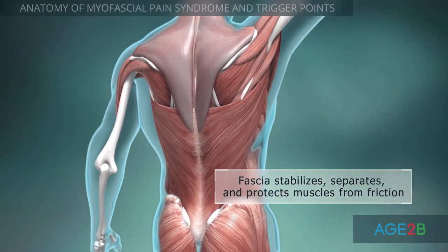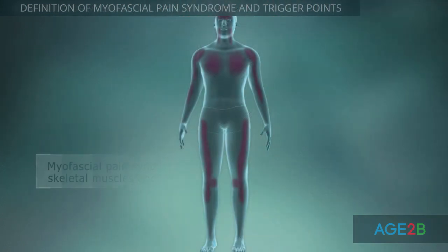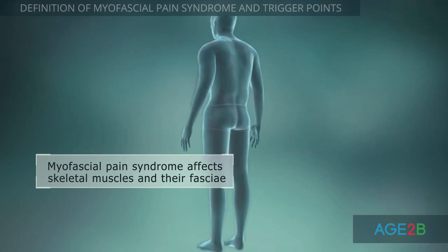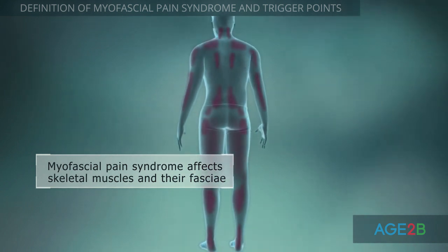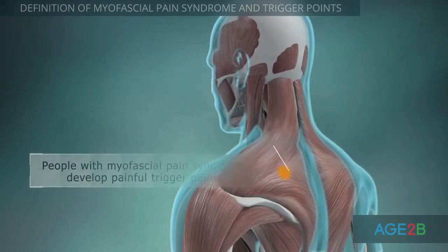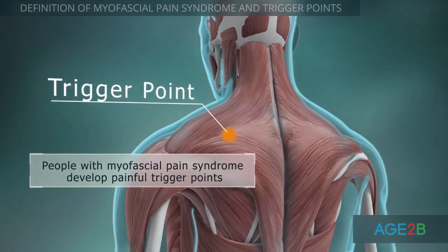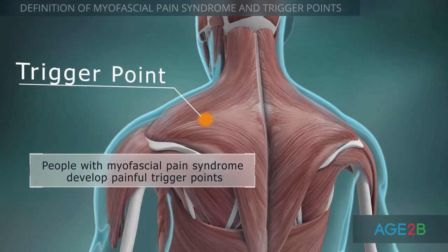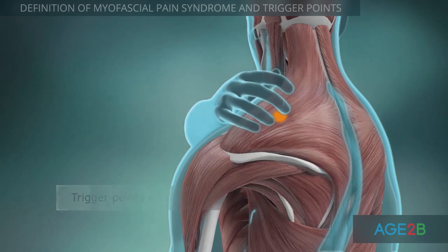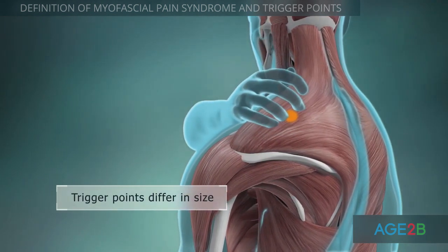Myofascial pain syndrome is characterized by ongoing muscle pain and tenderness. It can affect various muscles and fascia of the body. Trigger points develop in myofascial pain syndrome, which are small areas of tight, painful muscle tissue. Their size varies from a peanut to a pea. Sometimes trigger points can be felt under the skin.